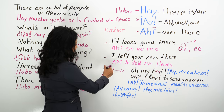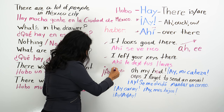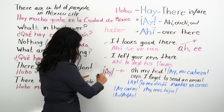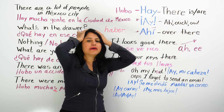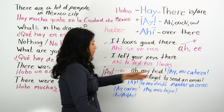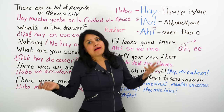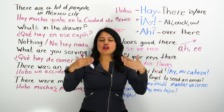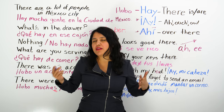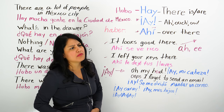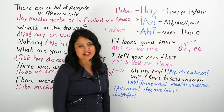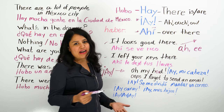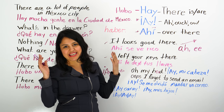¡Ay, mi cabeza! ¡Ay, me duele mi cabeza! ¡Ay, mi estómago! When you say 'ay,' you're just being more dramatic — solo estás siendo más dramático. ¡Ay, mis piernas! ¡Ay, mis ojos! If you want to be dramatic, then you use this interjection. Instead of just saying 'me duele la cabeza,' you say '¡ay, mi cabeza!'